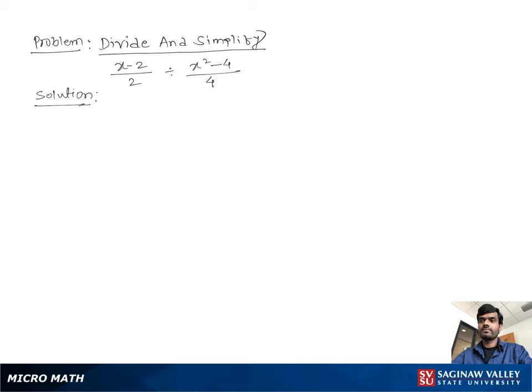Divide and simplify: (x-2)/2 ÷ (x²-4)/4. Let's write the problem again: (x-2)/2 ÷ (x²-4)/4.